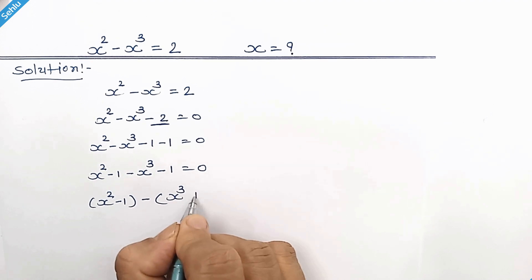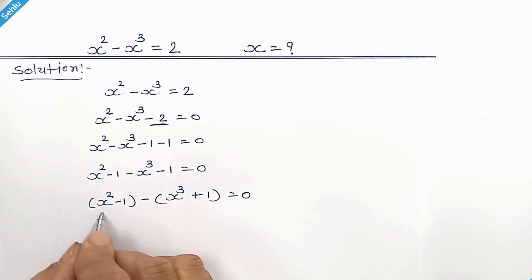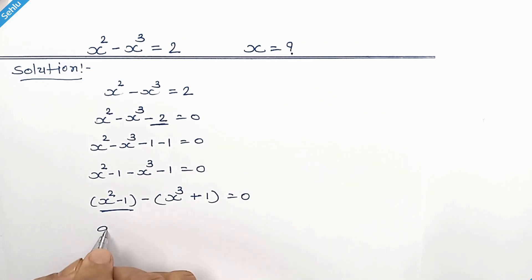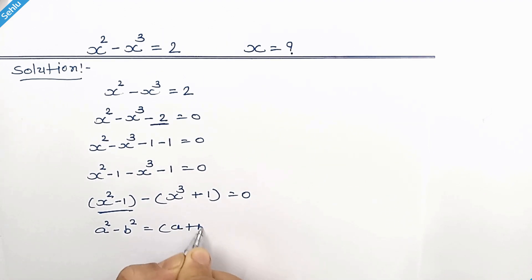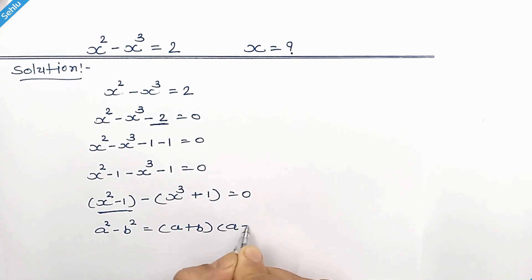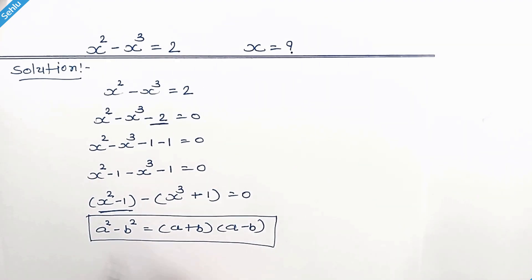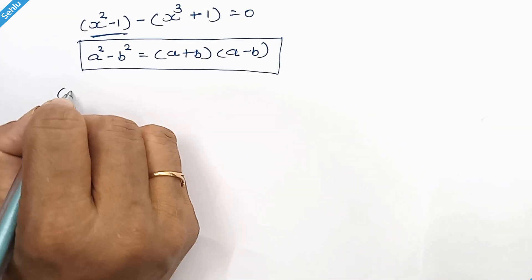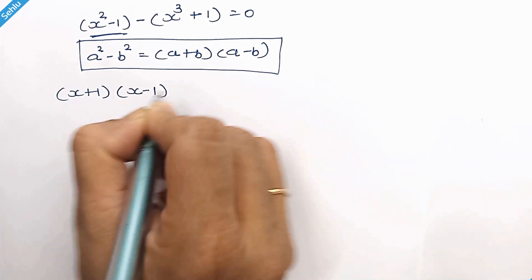So it will be (x squared minus 1) minus (x cubed minus 1), with a positive sign here. Now we will apply the identity a squared minus b squared equals (a plus b) times (a minus b), giving us (x plus 1) times (x minus 1).